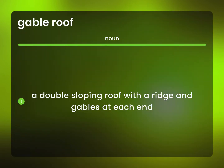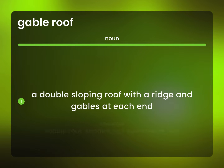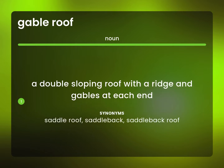A double sloping roof with a ridge and gables at each end. Saddle roof. Saddle back. Saddle back roof.